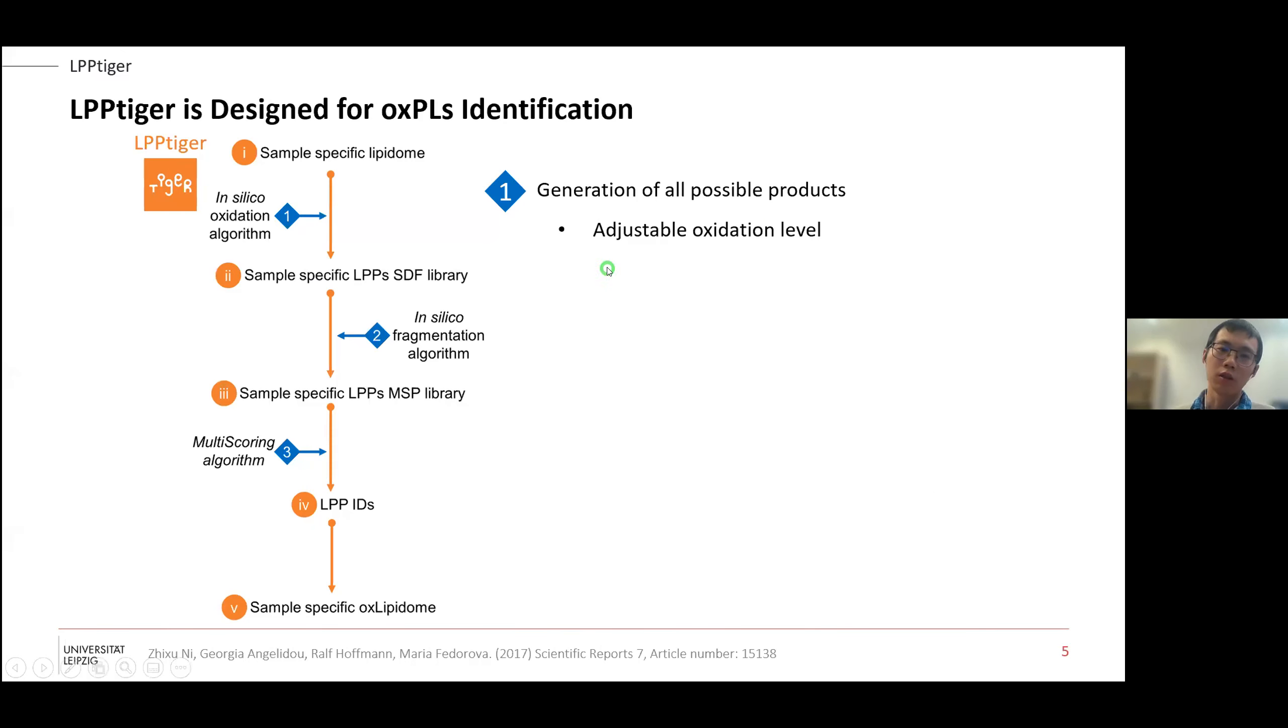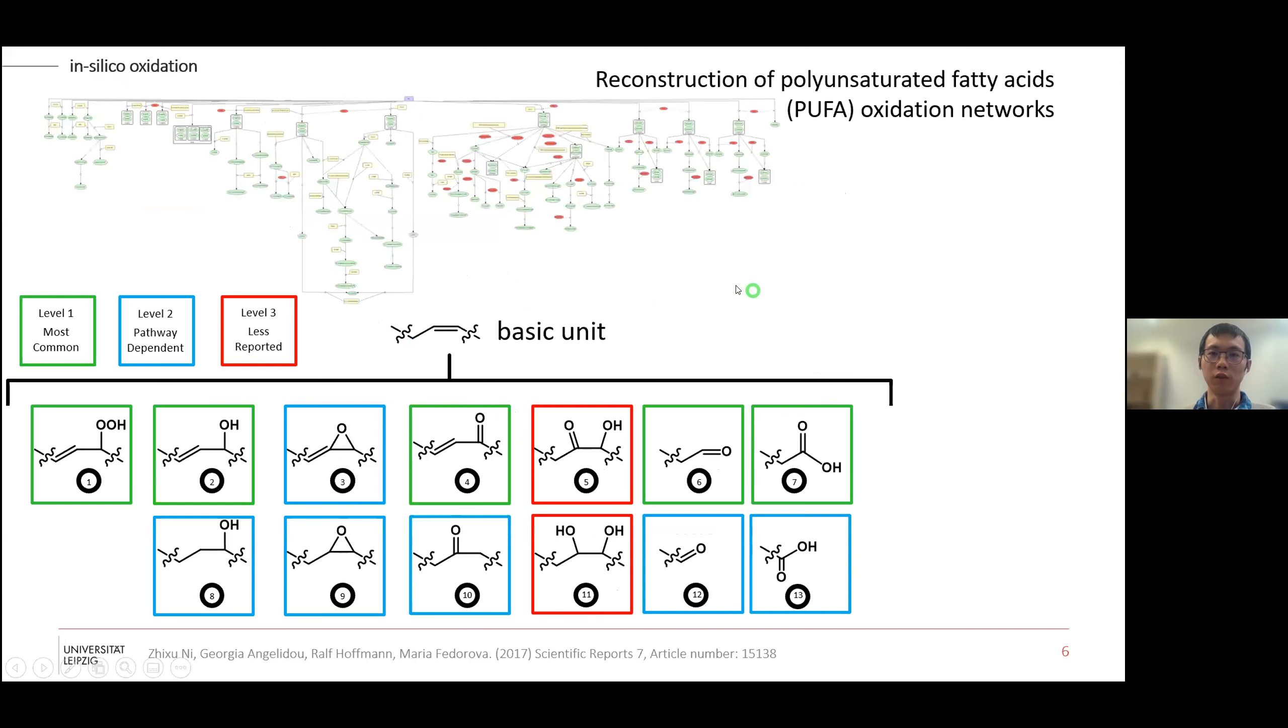The LPP Tiger software is designed to identify oxidized lipids to prove this concept. First we take the specific lipidome, then perform in silico oxidation to get this theoretical structure space. Then we can perform in silico fragmentation based on the fragmentation patterns we summarize.